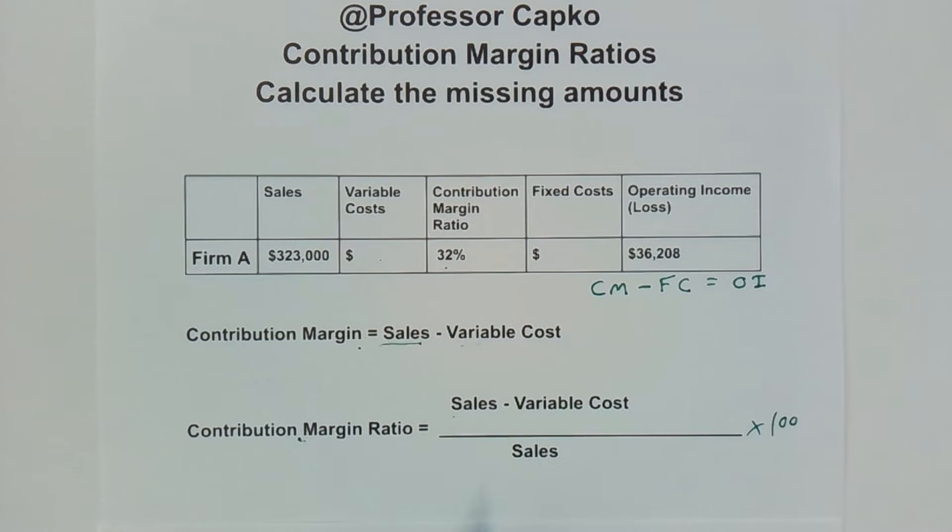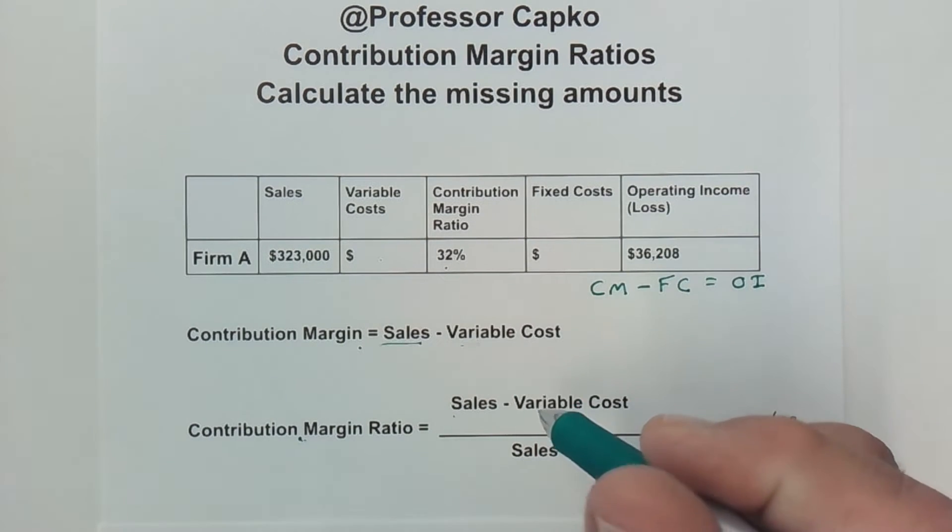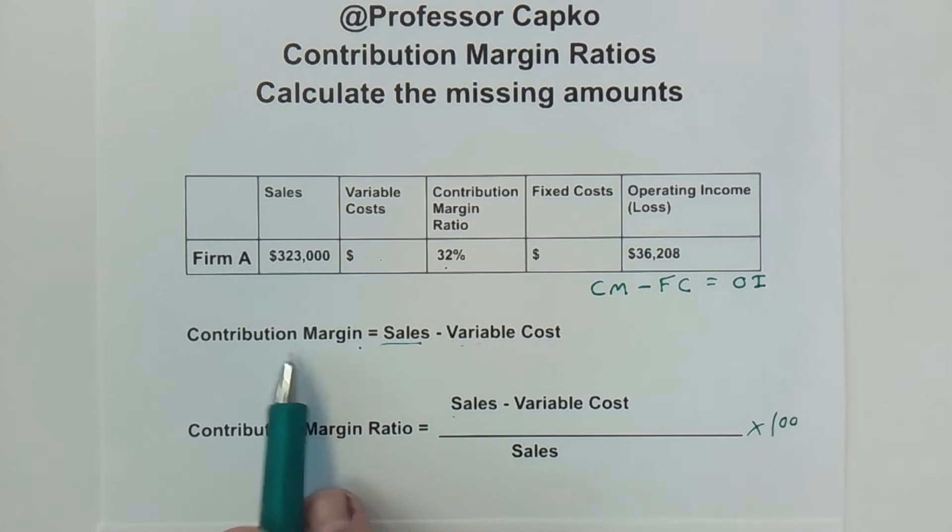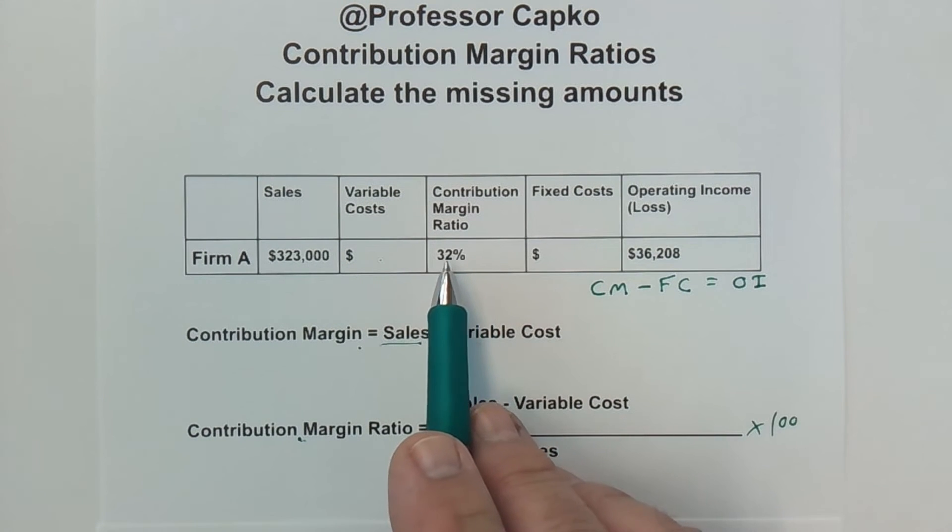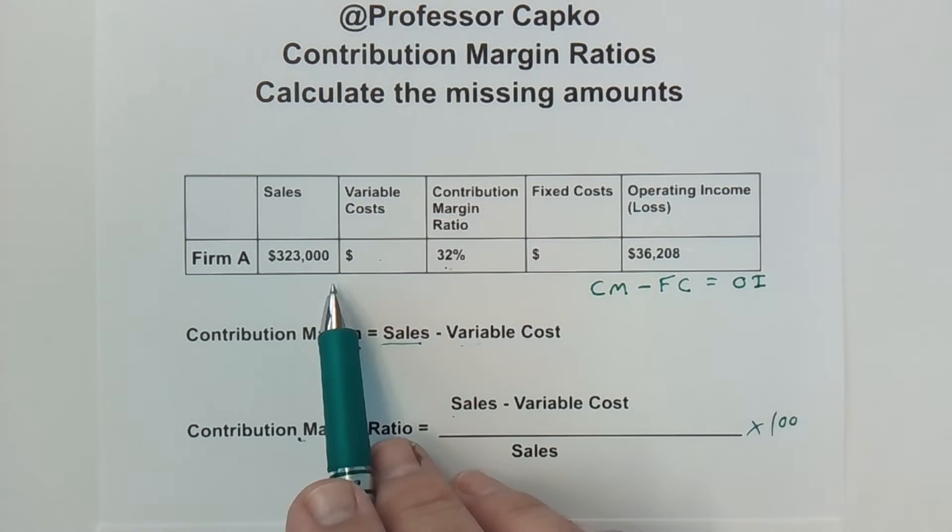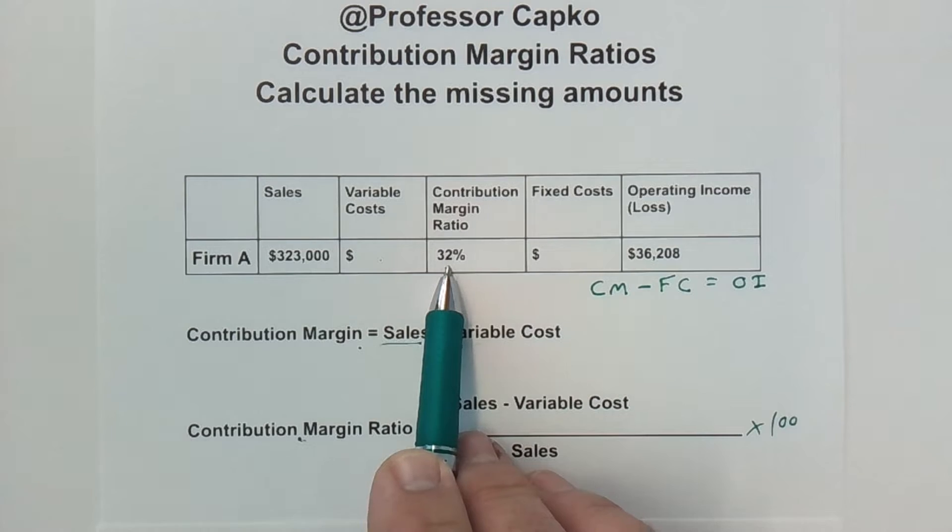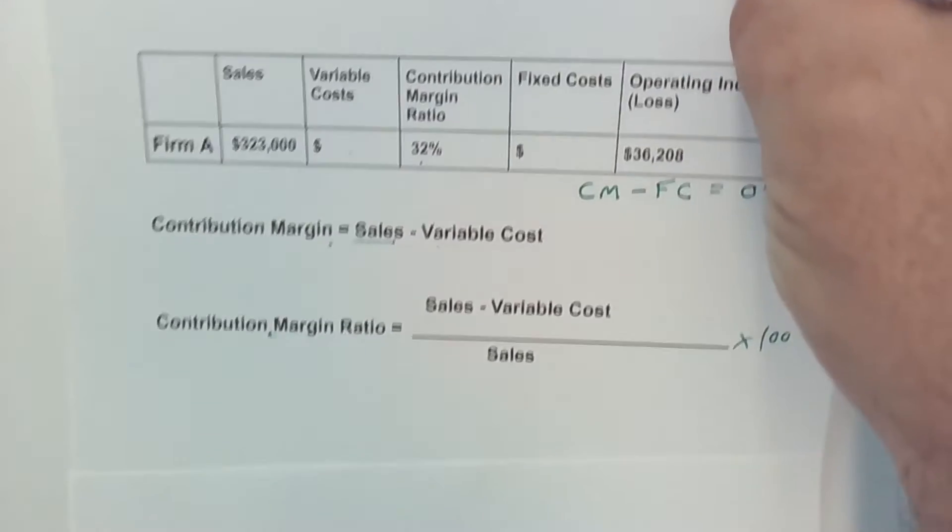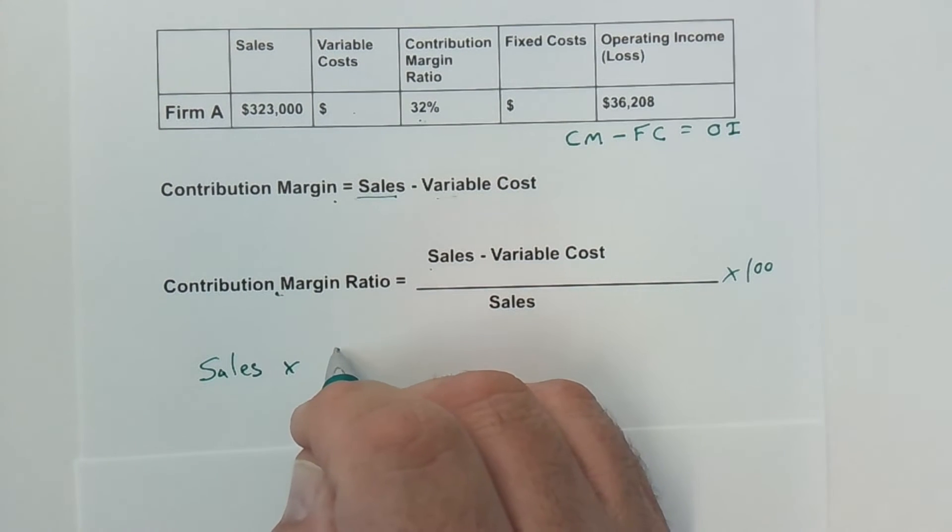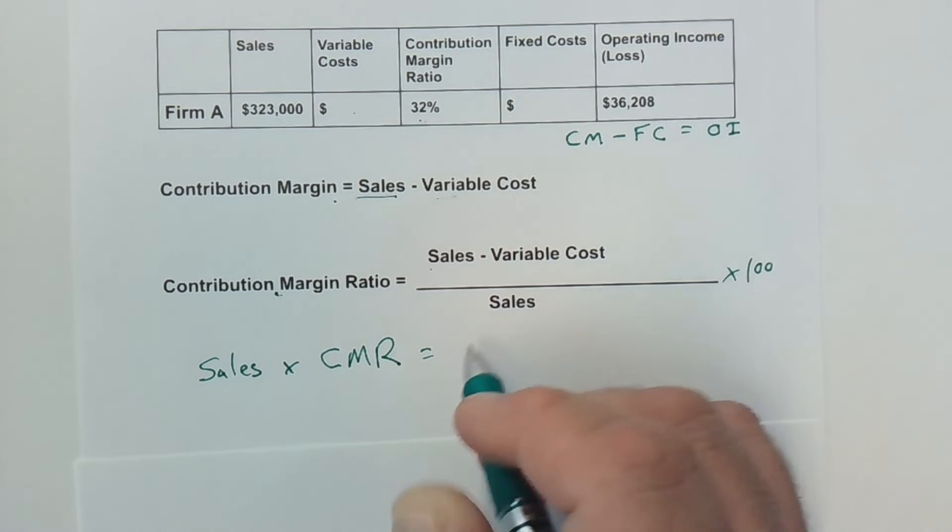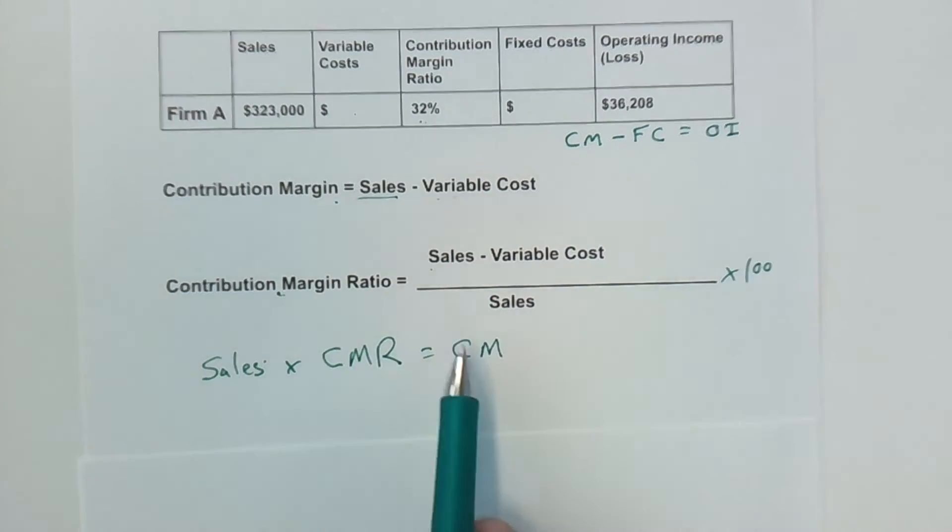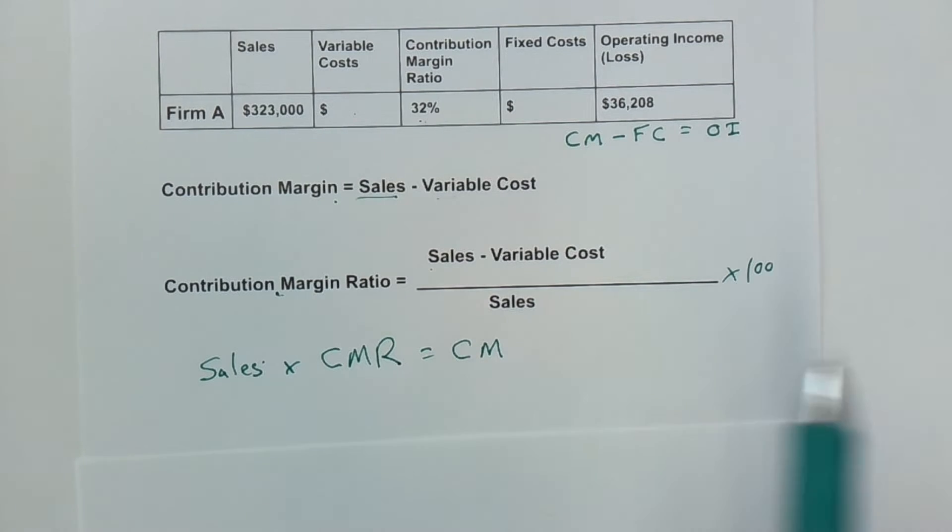Let's dive in to this particular problem. Thank you for the thumbs up, I appreciate it. It really helps grow the channel. The first thing we want to figure out is our contribution margin. In this case, we don't know what it is, but we do know the percentage. And if we look at how to figure it, if we say sales times the contribution margin ratio, that's going to give us our contribution margin. So sales times our contribution margin ratio is equal to our contribution margin.